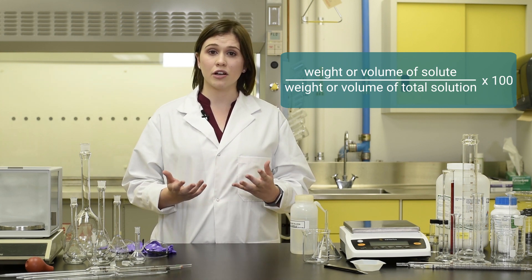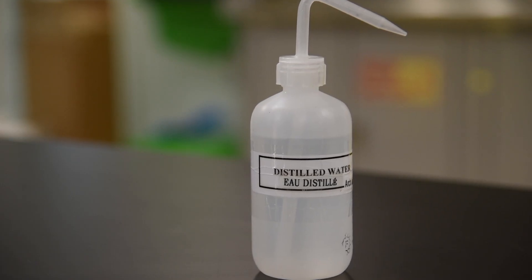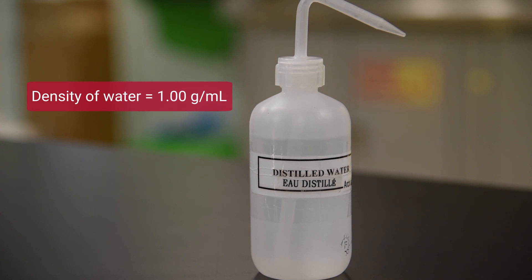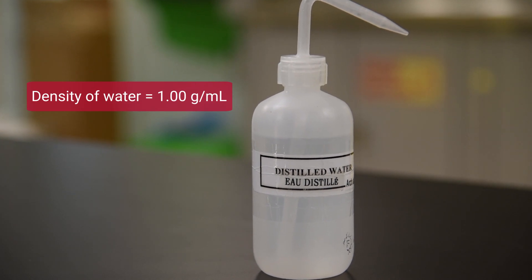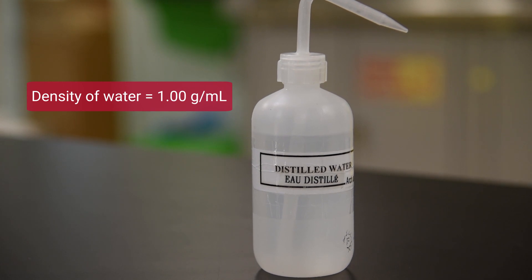For example, water has a density of 1.00 grams per milliliter, meaning that weight by weight and weight by volume aqueous solutions are roughly equivalent.